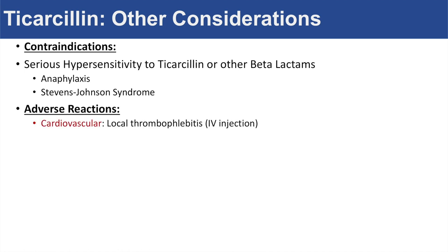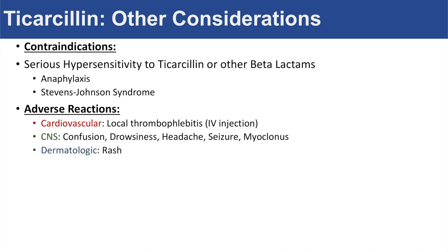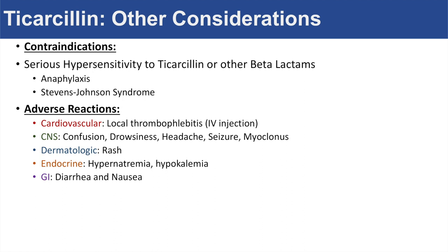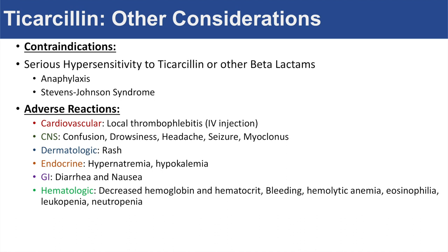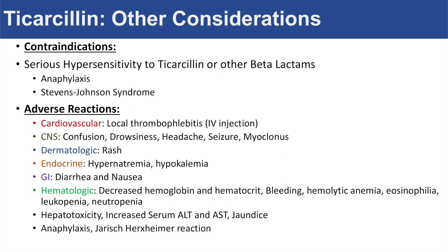Adverse reactions of Ticarcillin include cardiovascular side effects such as local thrombophlebitis, typically when administered through IV. There are central nervous system reactions including confusion, drowsiness, headache, seizures, and myoclonus. Dermatological reactions like rash can occur. Endocrine effects include hypernatremia and hypokalemia. Gastrointestinal effects include diarrhea and nausea. Hematologic reactions include decreased hemoglobin and hematocrit, bleeding, hemolytic anemia, eosinophilia, leukopenia, and neutropenia. There can also be hepatotoxicity — increased serum ALT and AST, jaundice, and anaphylaxis.